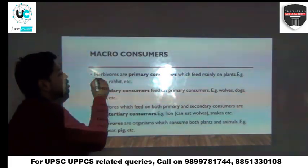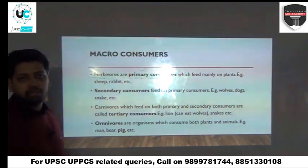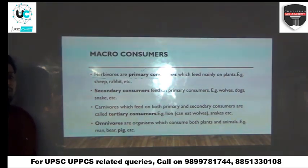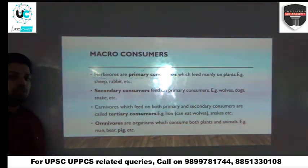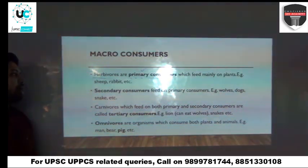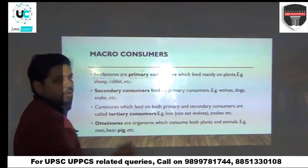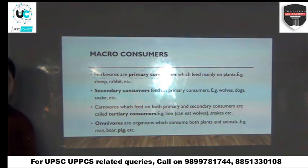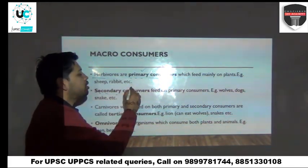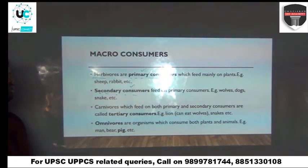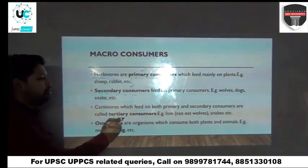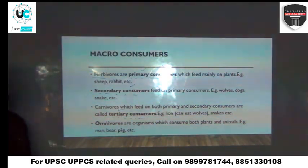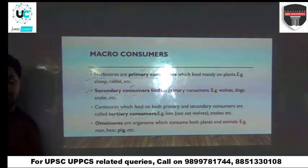In terms of categorization, first you have herbivores, which are your primary consumers. They eat your primary producers — the plants. Then you have secondary consumers, which feed on these primary consumers. Then you have tertiary consumers, which eat both your primary as well as your secondary consumers.